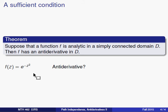Here's an example of a function e to the minus z squared, and you may not know what an anti-derivative one should look like, but because this function is analytic, actually it's entire, there should be an anti-derivative.